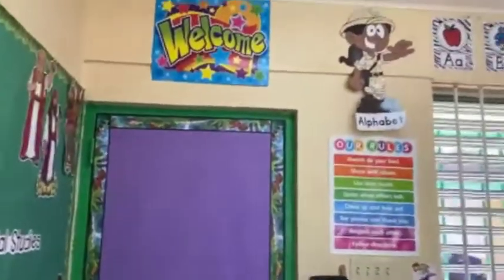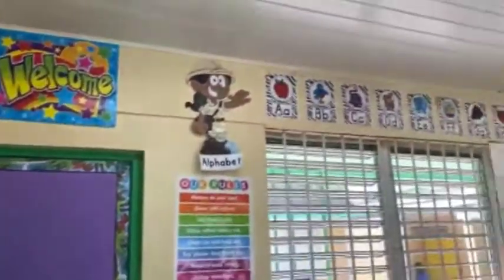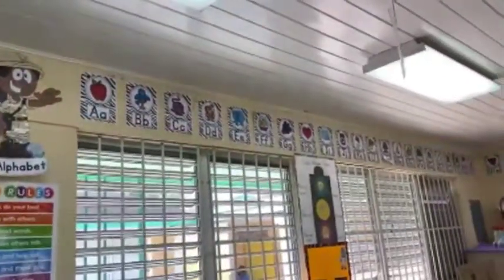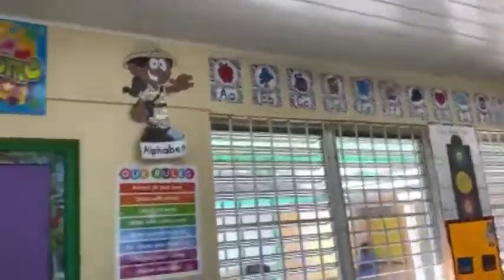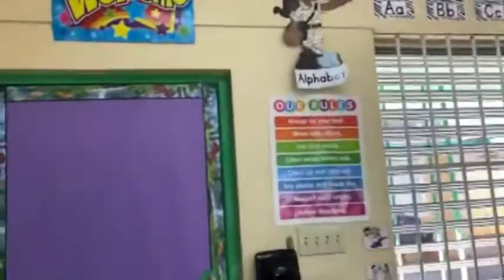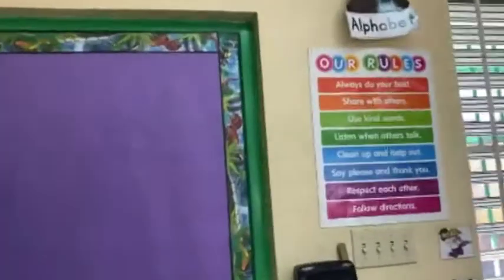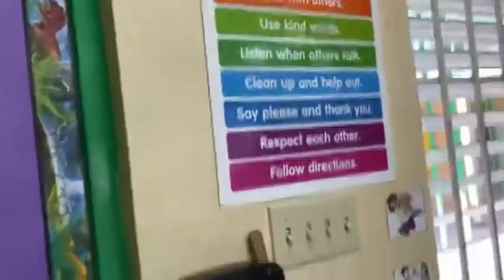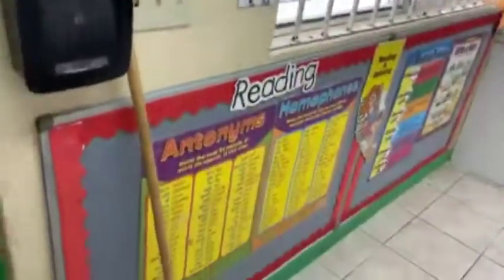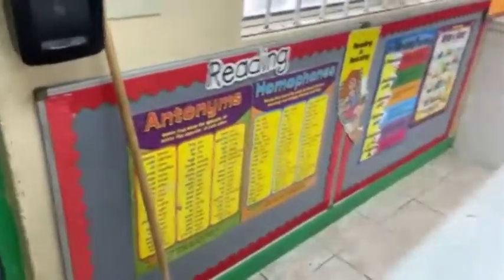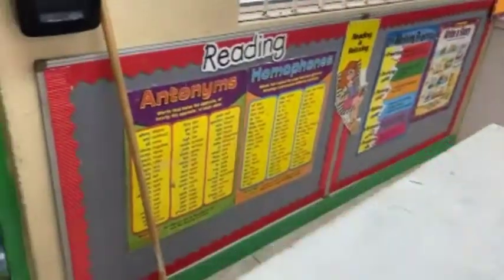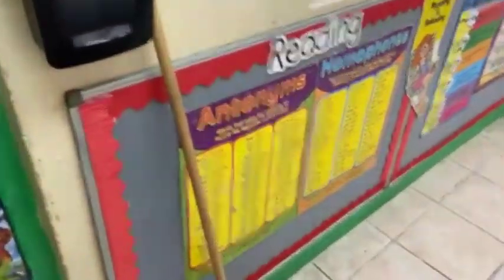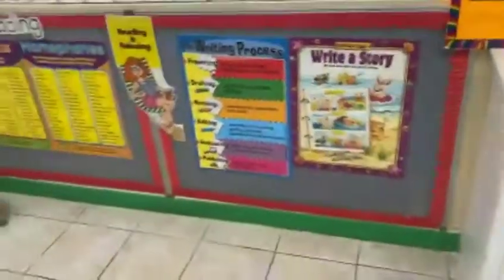Over here is the alphabet chart up top. Here I have our class rules, just so the kids are reminded of it every day. Down here is basically like a reading corner — I didn't know what to put in so I just wanted to make use of the charts I had.